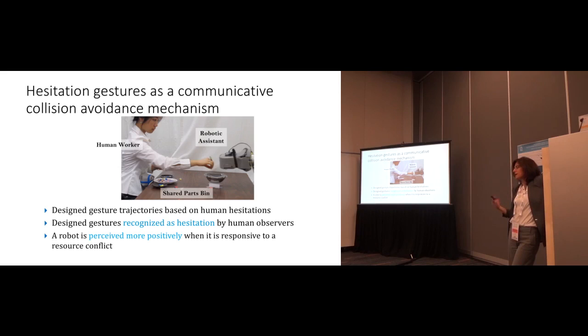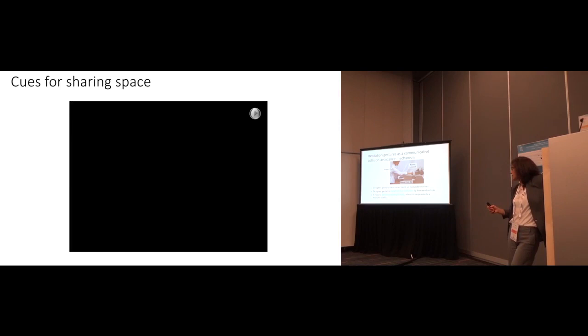What we found through a study with users is, although it did not make the task go any quicker based on a number of measures, people liked the robot better. They found the robot more understandable, more positive, more friendly. They used terms like friendly when the robot used a hesitation gesture as part of a collision avoidance mechanism.